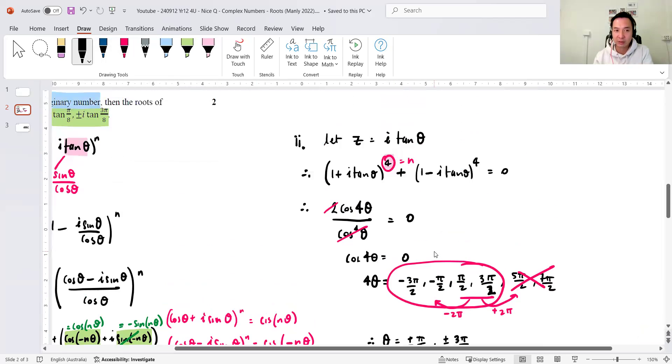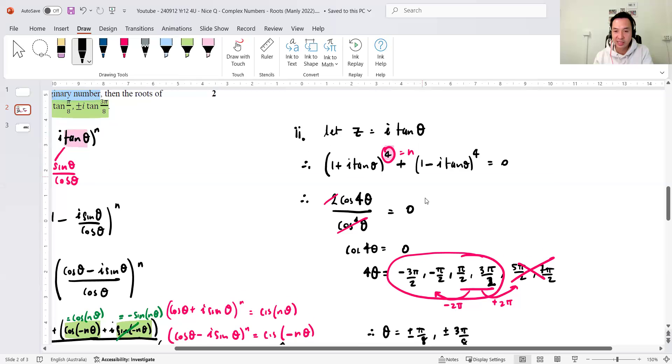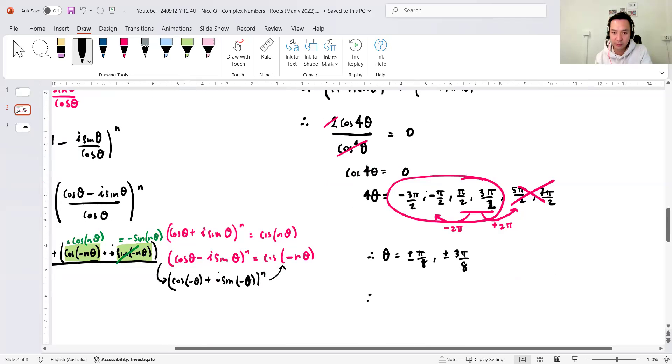Now, once you get theta, just referring back to the blue part that says it's imaginary. Since z equals to i tan theta, you go therefore z equals to plus minus i tan pi over 8. And plus minus i tan 3 pi over 8. Pretty straightforward.